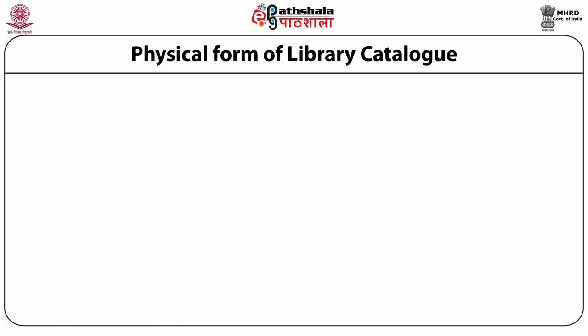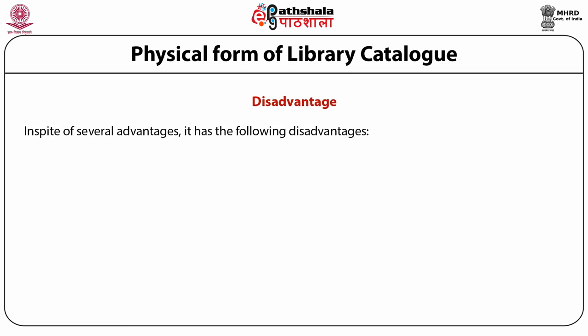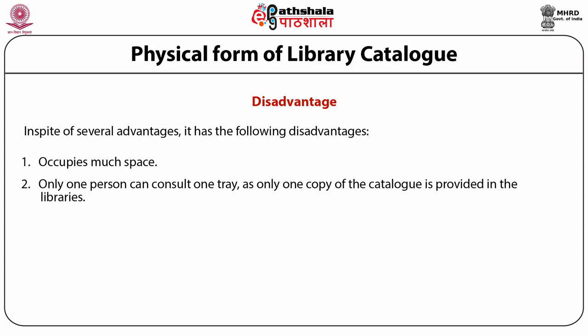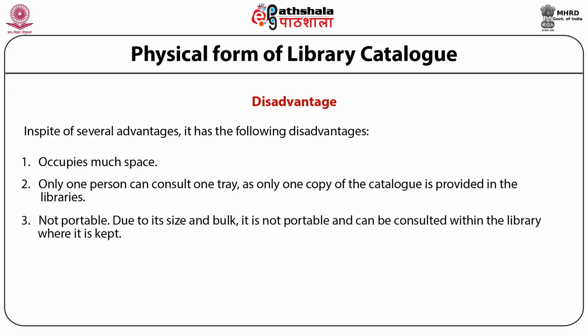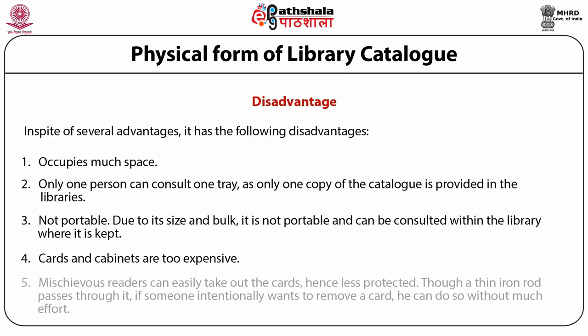Some limitations or disadvantages of card catalog are: first, it occupies much space. Second, only one person can consult one tray, as typically only one copy of the catalog is provided. Third, it is not portable — due to its size and bulk, it can only be consulted within the library where it is kept. Fourth, cards and cabinets are too expensive. Fifth, mischievous readers can easily take out the cards, making them less protected — though a thin iron rod passes through the cards, someone who intentionally wants to remove a card can do so without much effort.